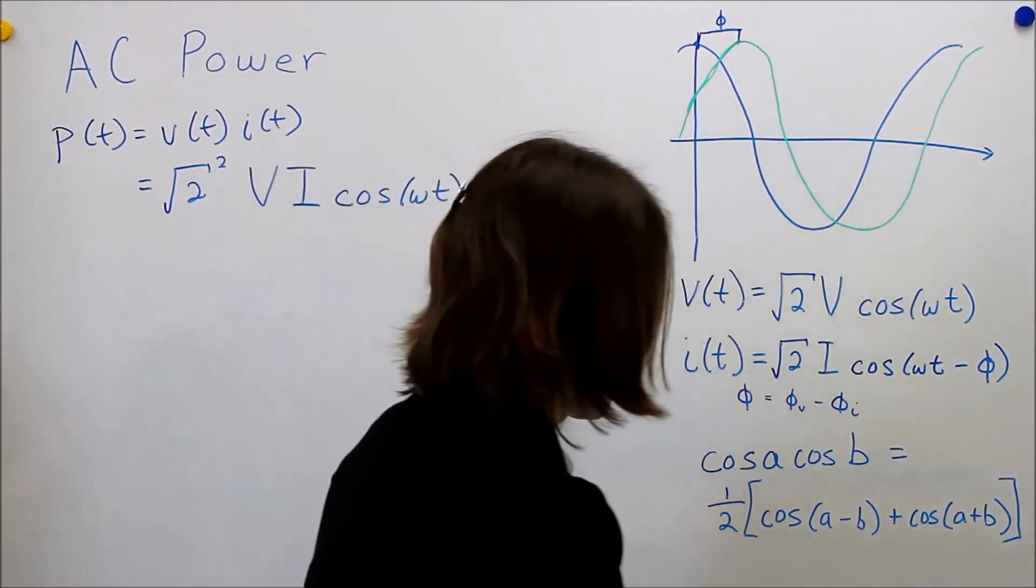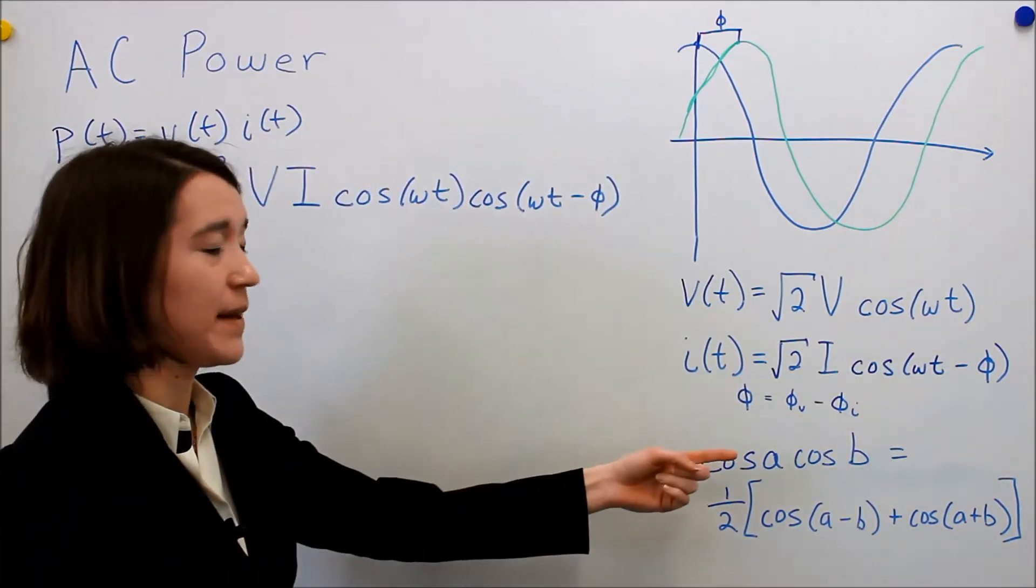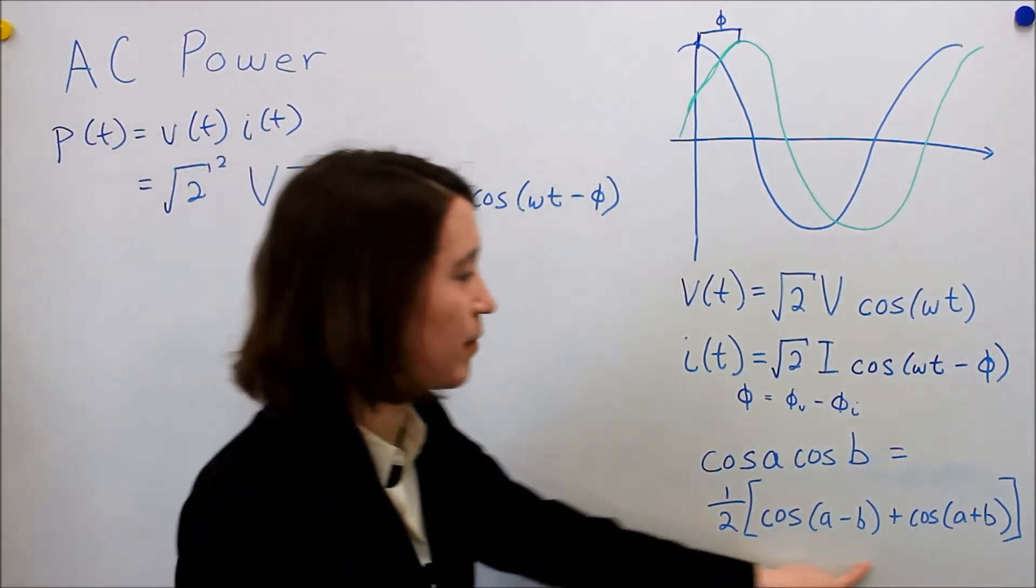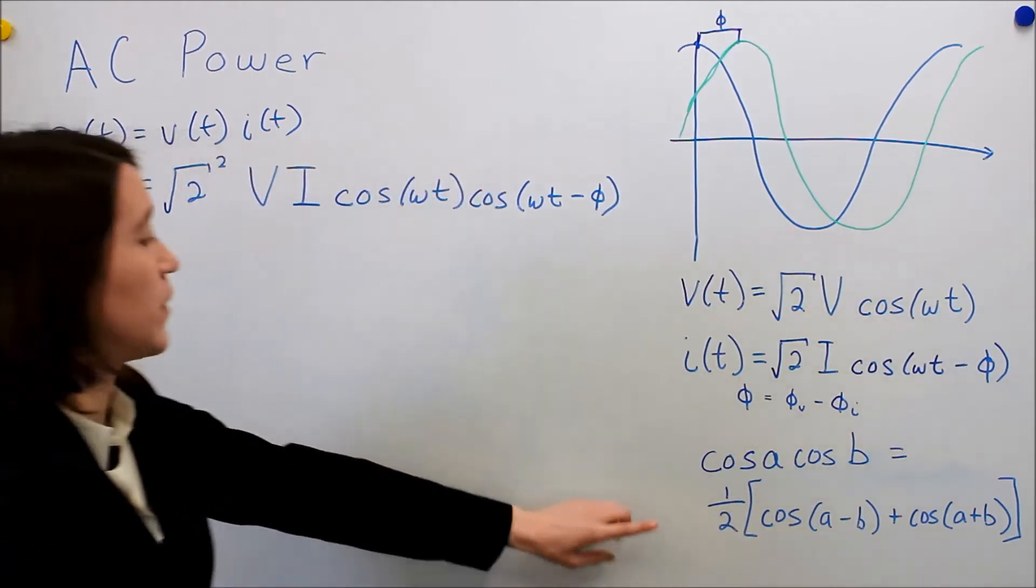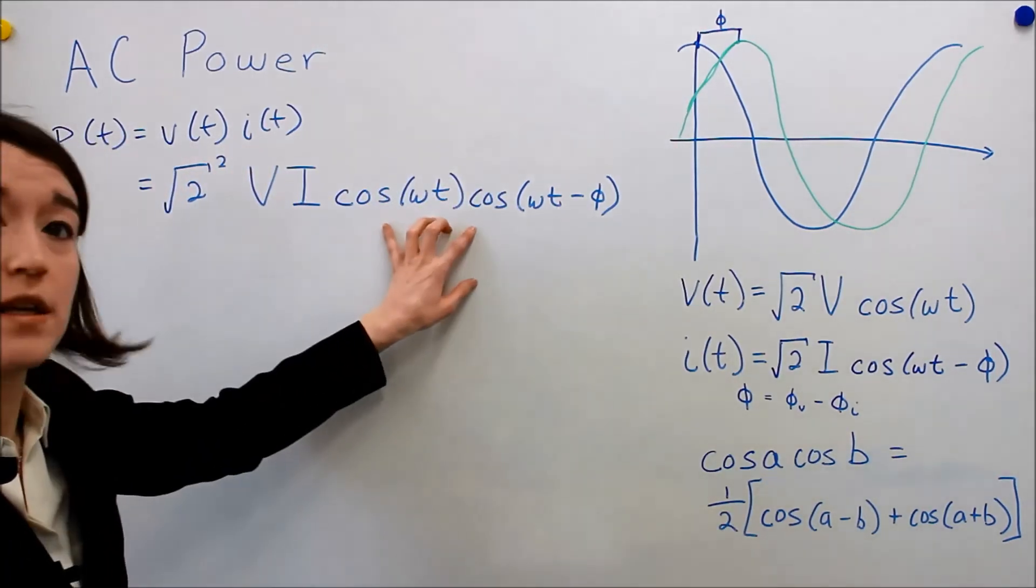So we have a trigonometry identity here, trig identity. And we see that if we have the cosine of a and b multiplied by each other, we can simplify it into this form. So we can take that and plug it in here. So we'll do that.